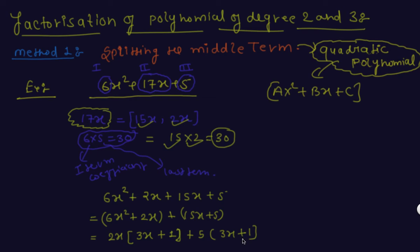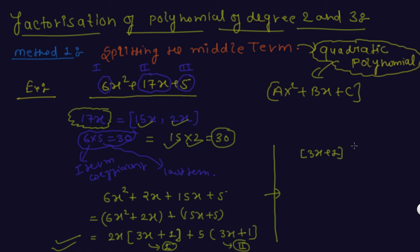If you want to check whether the solution is right, cross-check this step: if the value in the first bracket and value in the second bracket are equal, your solution is correct up to that point. Then take 3x + 1 as common, giving the factors 3x + 1 and 2x + 5. I hope you understand this method of splitting the middle term.